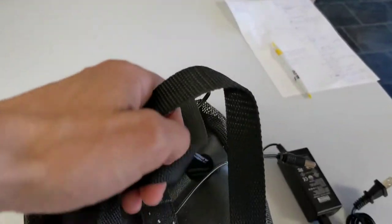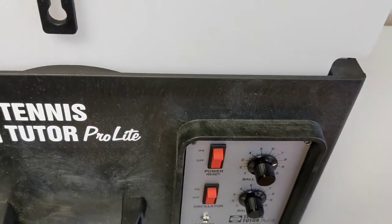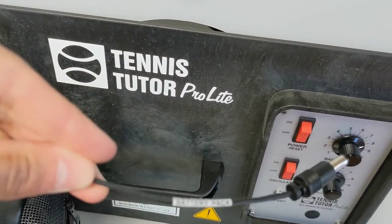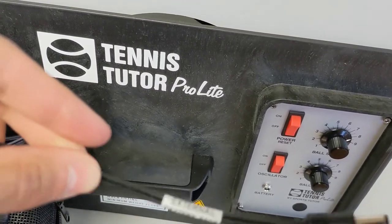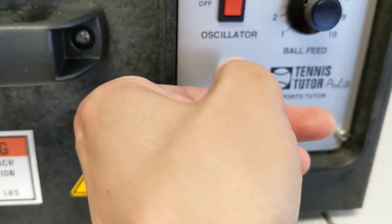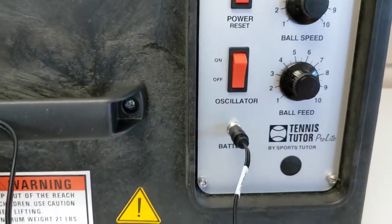You want to locate the external battery pack and pull out the external battery pack cable, which is labeled, and plug it into the battery port on the front of the machine.